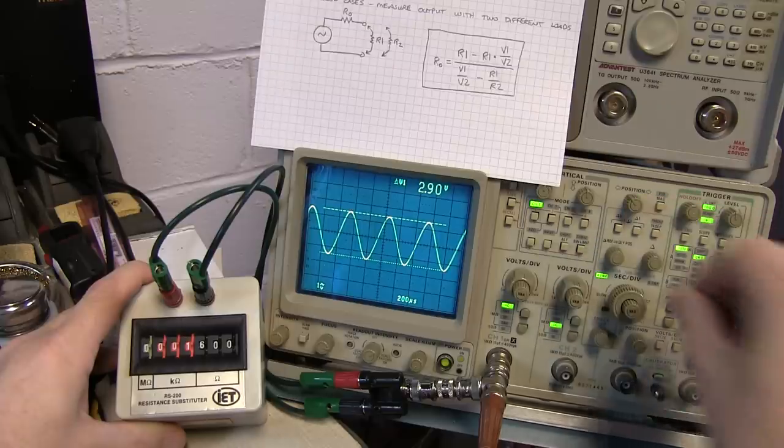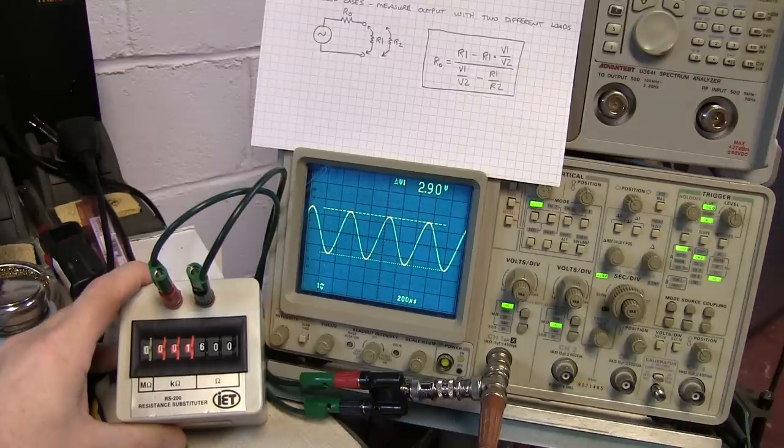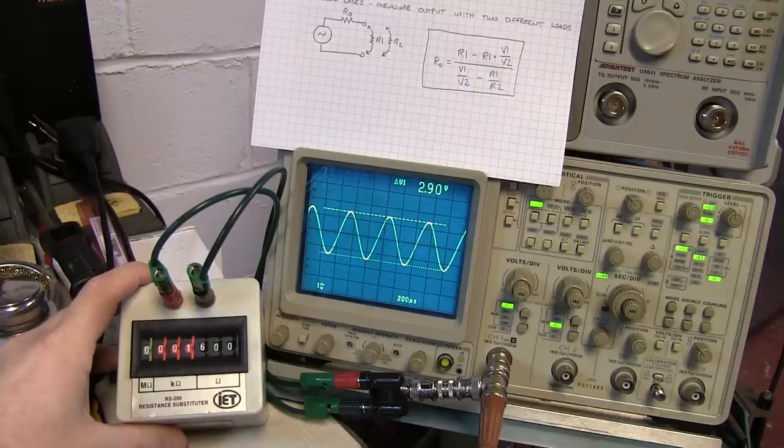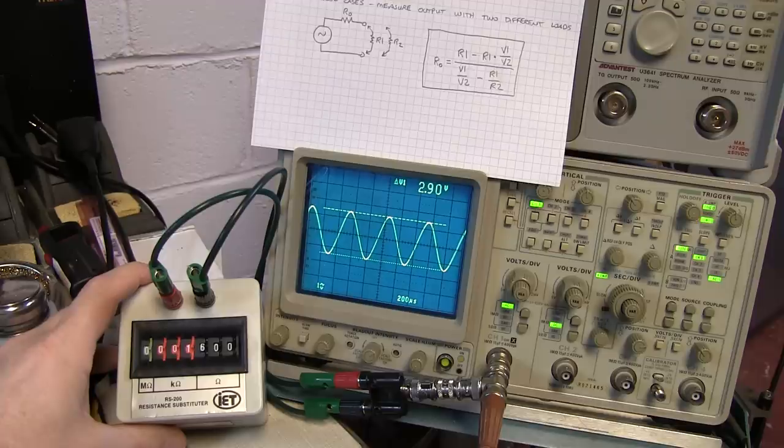And it looks to me that we're right around 2.9 or so, right about 2.9 volts peak to peak with a 1600 ohm load. So we can use those two values, 2 volts and 600 ohms and 2.9 volts at 1600 ohms, and calculate the output impedance from that.